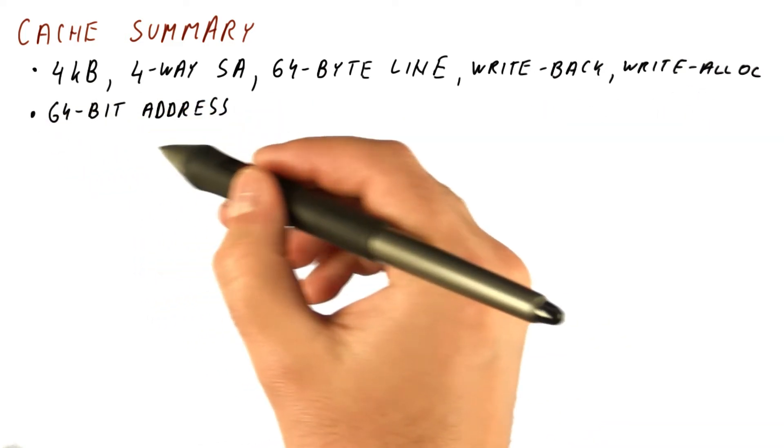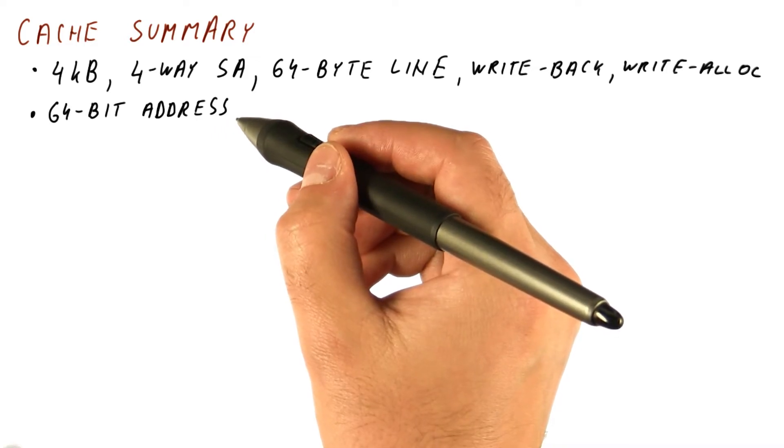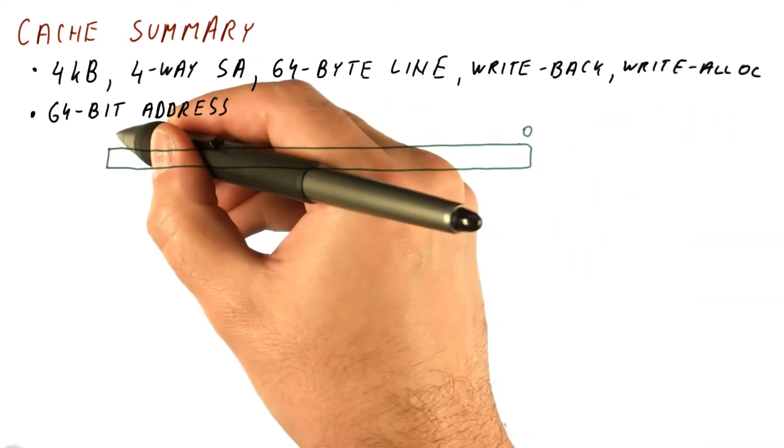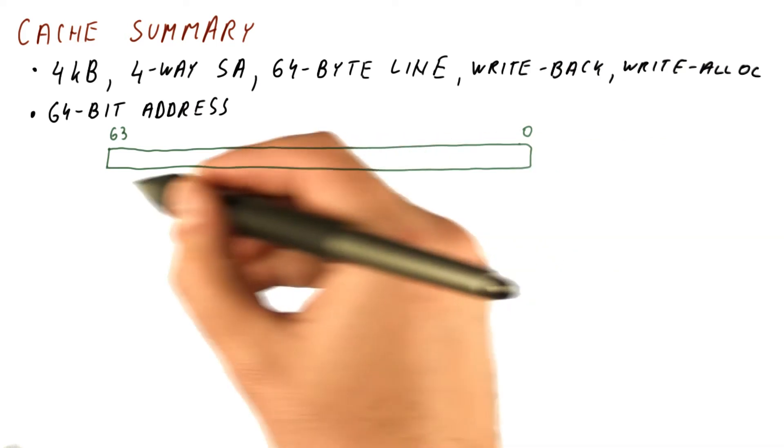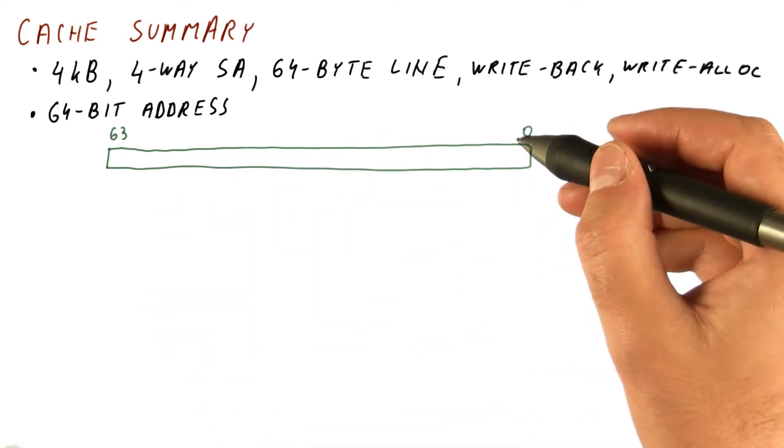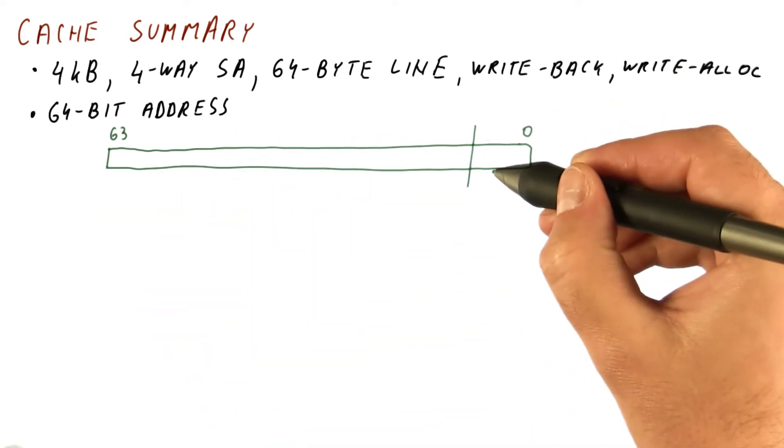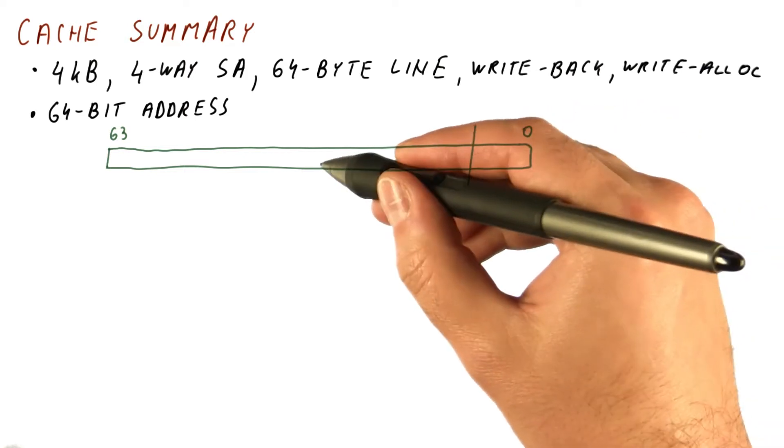The processor creates 64-bit addresses to access the cache. When accessing this cache, the 64-bit address will be divided into offset bits, index bits, and tag bits.